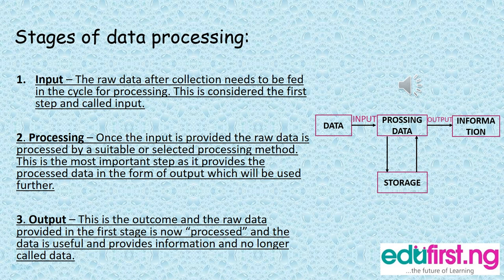The output stage: this is the outcome. The raw data provided in the first stage is now processed and becomes useful, providing information. It is no longer called data — it is now called meaningful information. Your newspapers, textbooks, and novels are meaningful, and that is why you read them. These are the outputs, the outcomes of the processed raw data.